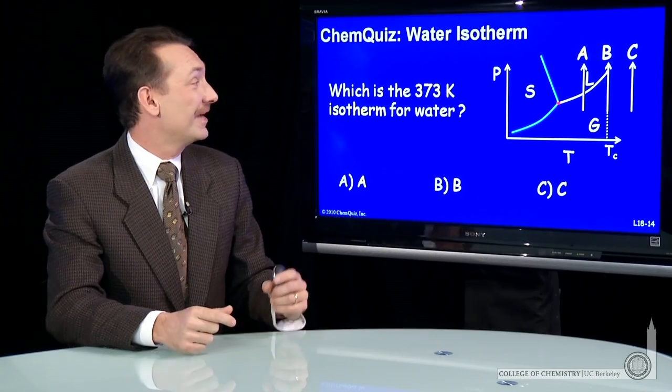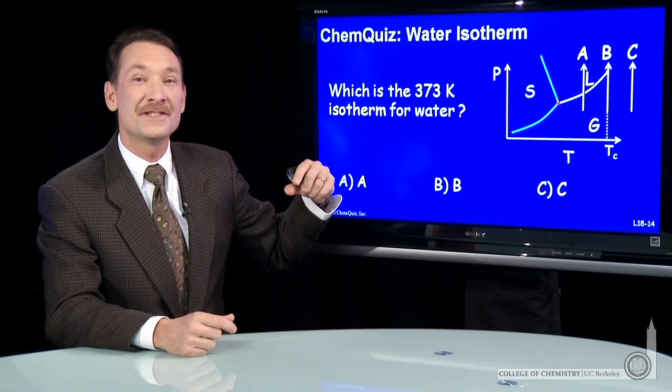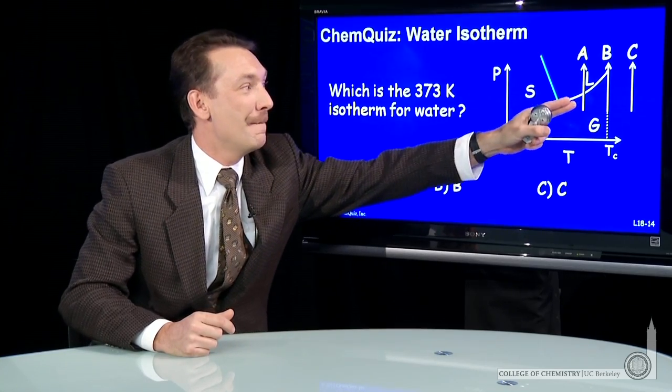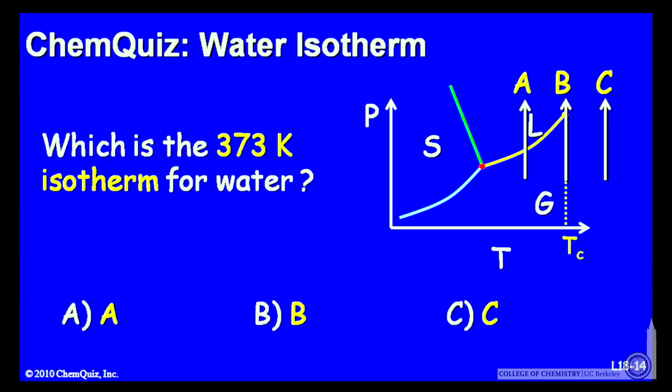Let's look at a phase diagram for water and try to predict where the 373-Kelvin isotherm is. Is it line A, B, or C? Think about that for a minute and make a selection.